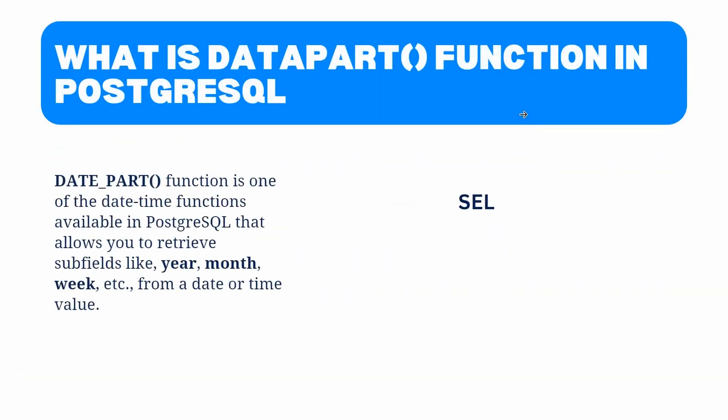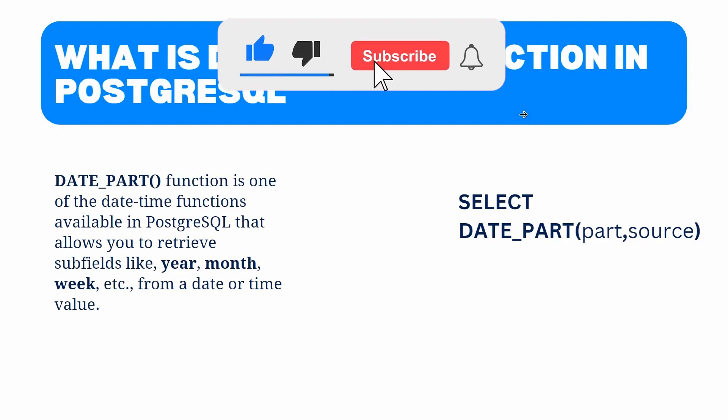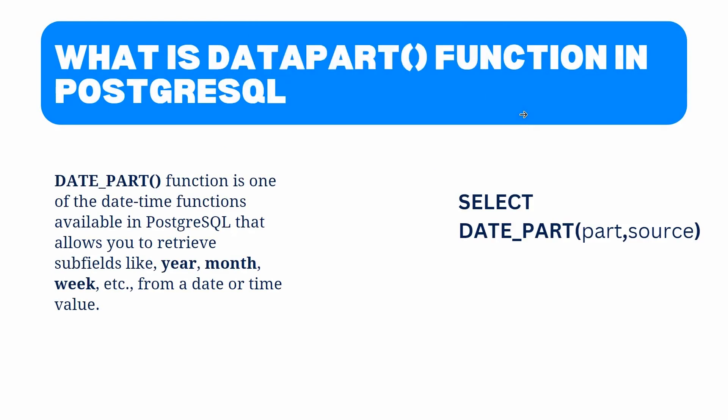Now let's move to the first topic: what is the date_part function in PostgreSQL? The date_part function is used to extract a specific part of a date or time value, such as the year, month, day, hour, minute, or second.